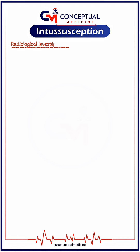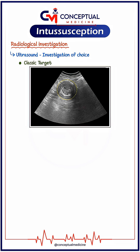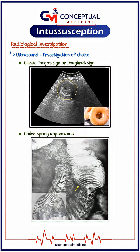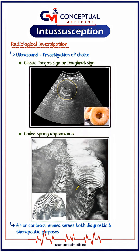For investigation, ultrasound is the investigation of choice. On ultrasound, look for the classic target sign or donut sign. Sometimes you may also see a coiled spring appearance. Air or contrast enema serves both diagnostic and therapeutic purposes.